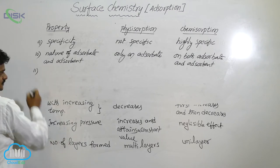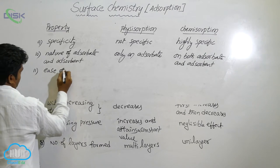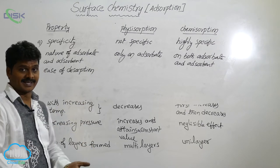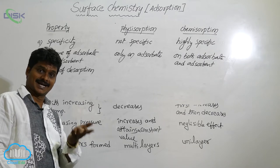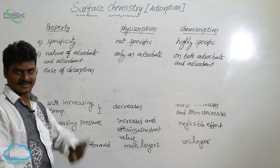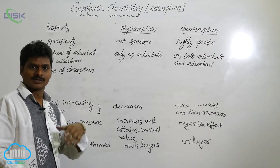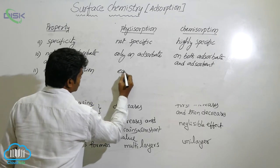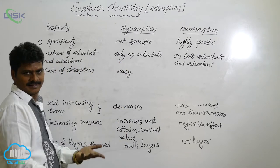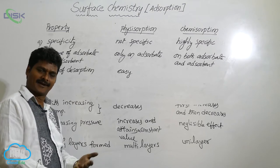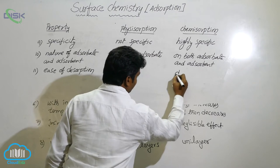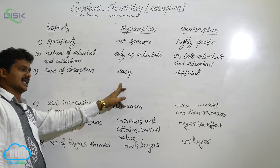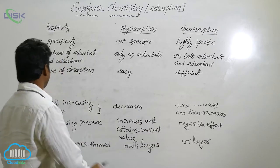The eleventh property is ease of desorption. Desorption means the escaping of already-adsorbed molecules from the surface of the adsorbent. In physical adsorption, desorption is very easy because the intermolecular forces are van der Waals forces. But desorption is very difficult in the case of chemical adsorption.